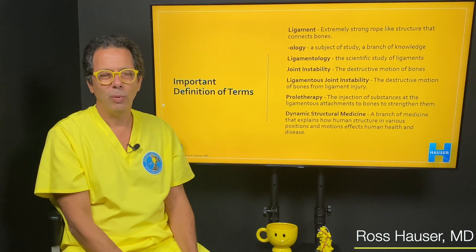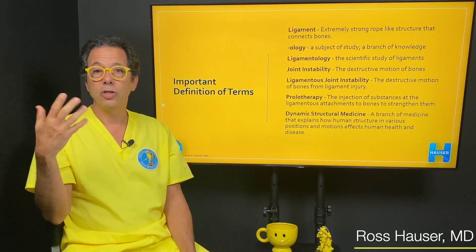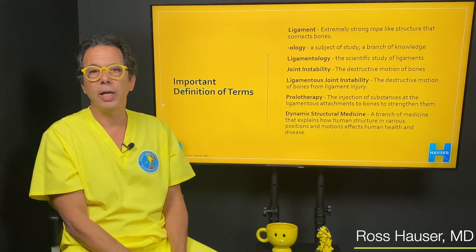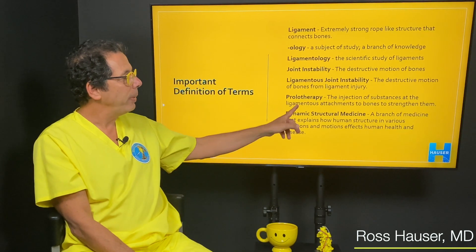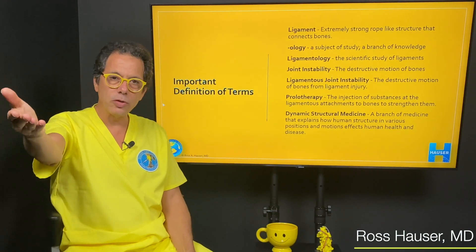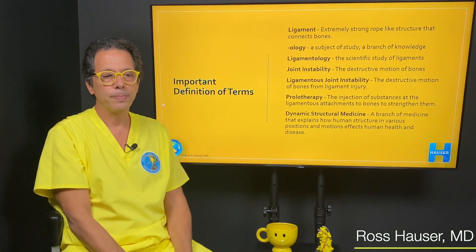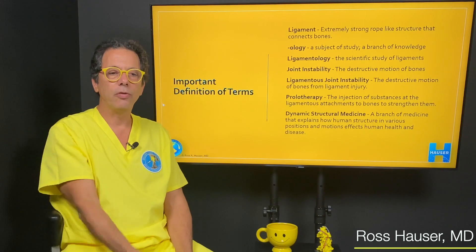We had one patient recently who had a feeding tube, and I was actually the one who pulled it out — within about a month of the person coming here. Some of the patients that come to Caring Medical actually live here for a while, because the severity of their cases is so severe they need to be here while the staff and I treat them. Prolotherapy is the injection of substances at the ligamentous attachments to bone to strengthen them. Joint instability involves destructive motions of bone. Prolotherapy resolves the destructive motions of bone.